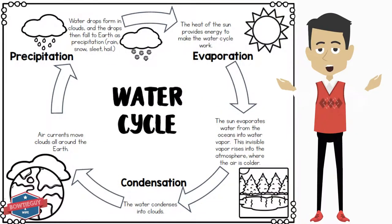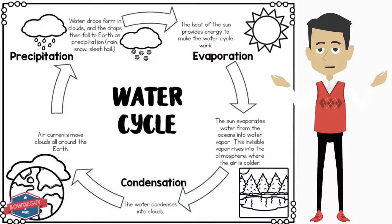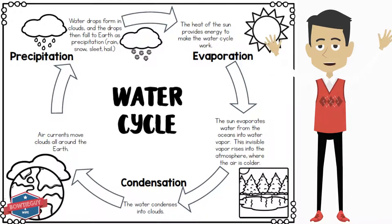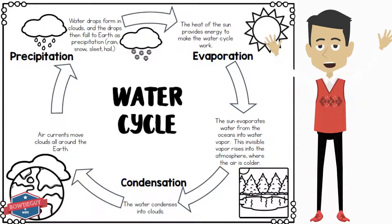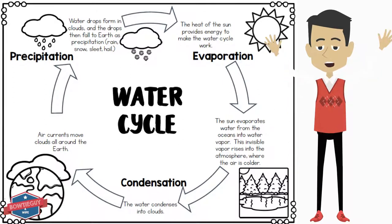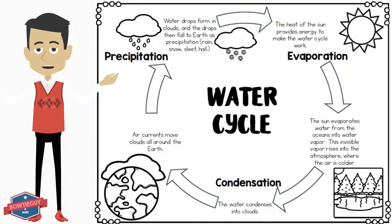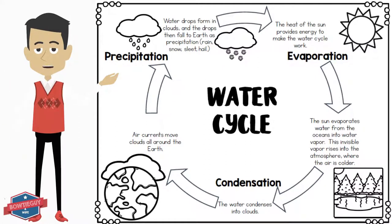So in conclusion, let's review the water cycle. Water drops form in clouds and the drops then fall to Earth as precipitation — rain, snow, sleet, and hail. The heat of the sun provides energy to make the water cycle work. The sun evaporates water from the oceans into water vapor. This invisible water vapor rises into the atmosphere where the air is colder. The water condenses into clouds. Air currents move clouds all around the Earth, and the water cycle repeats over and over again.